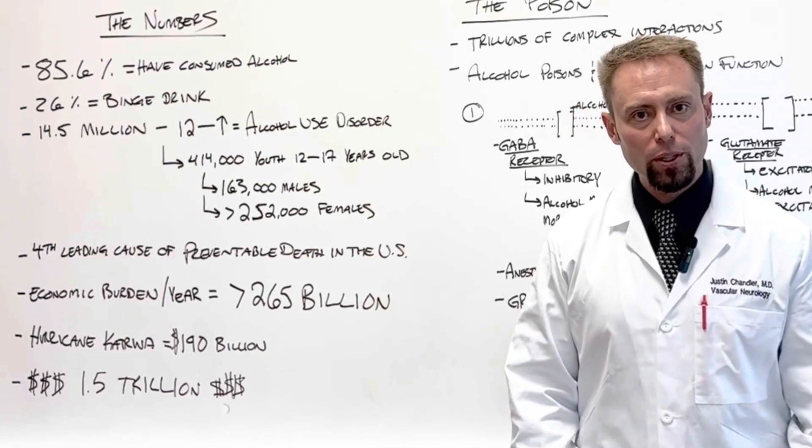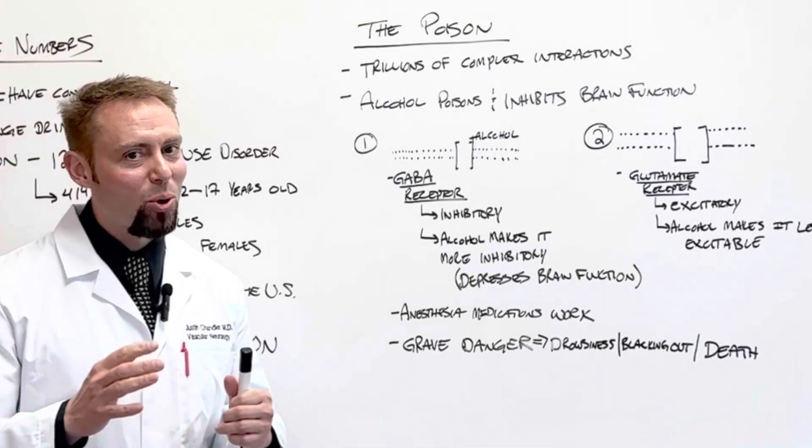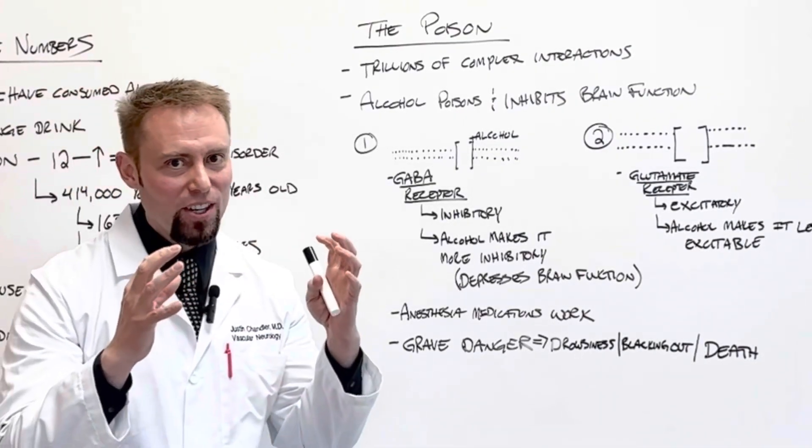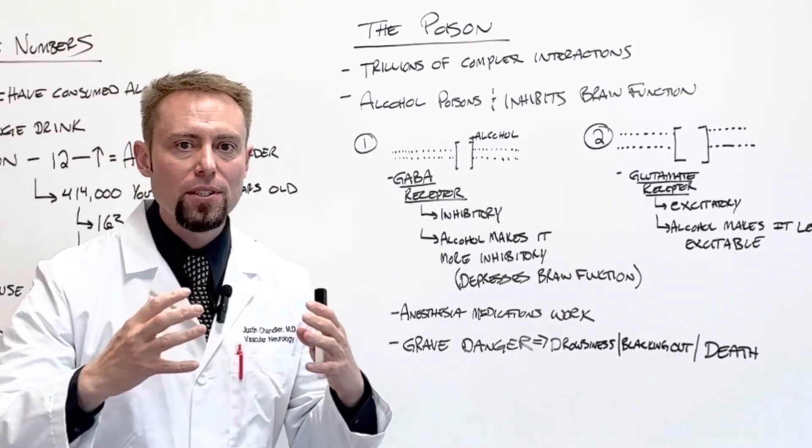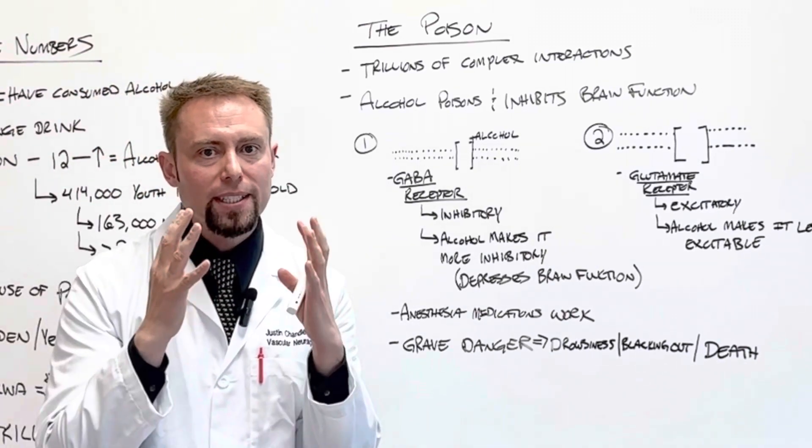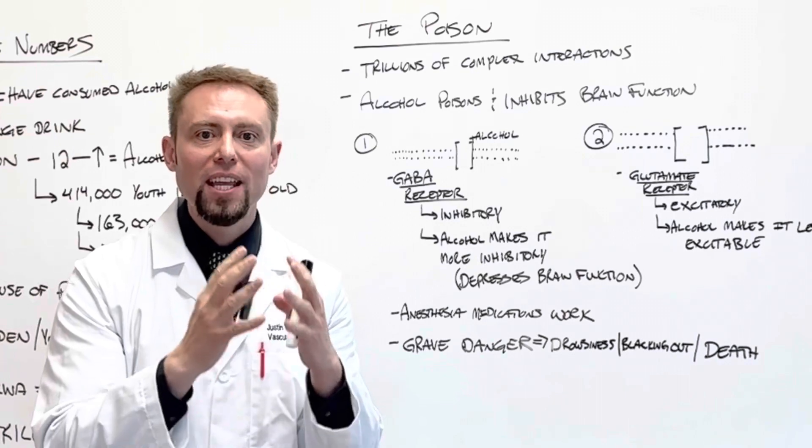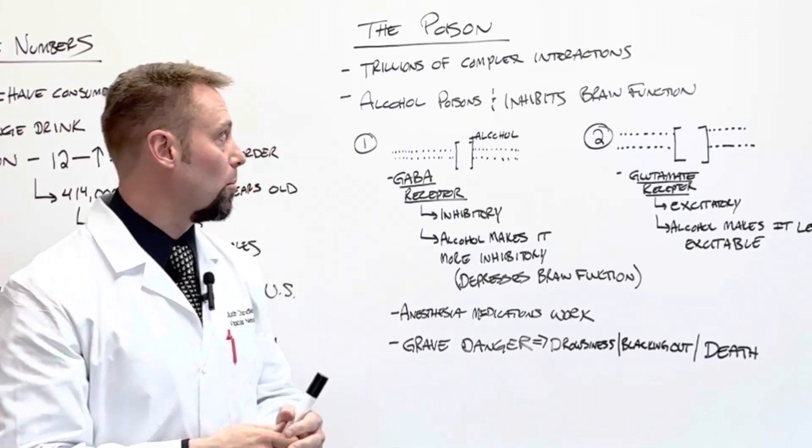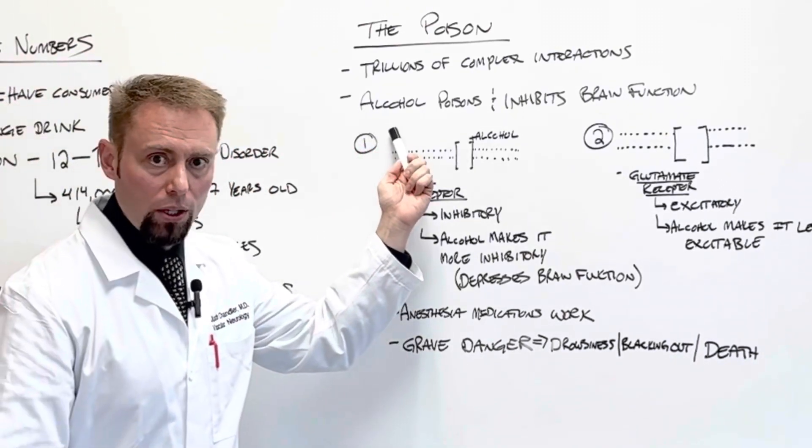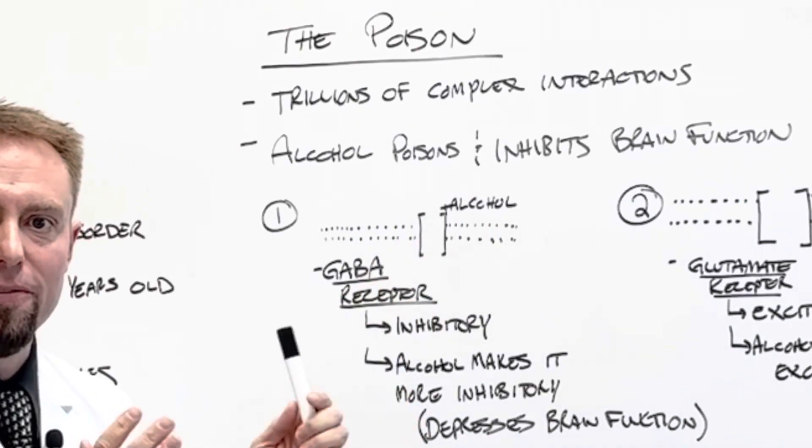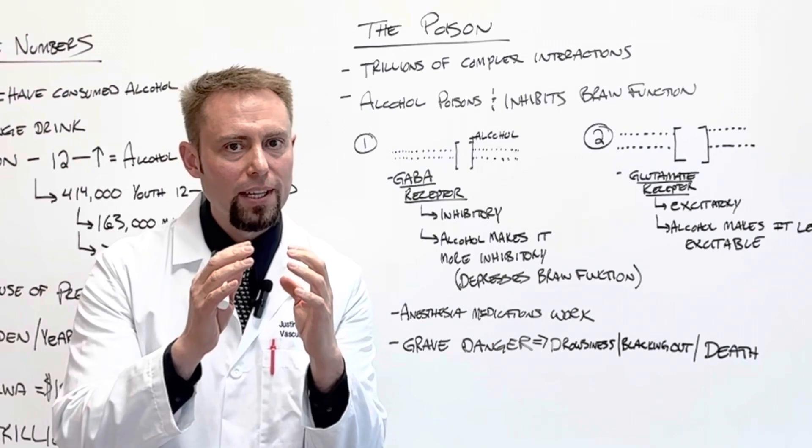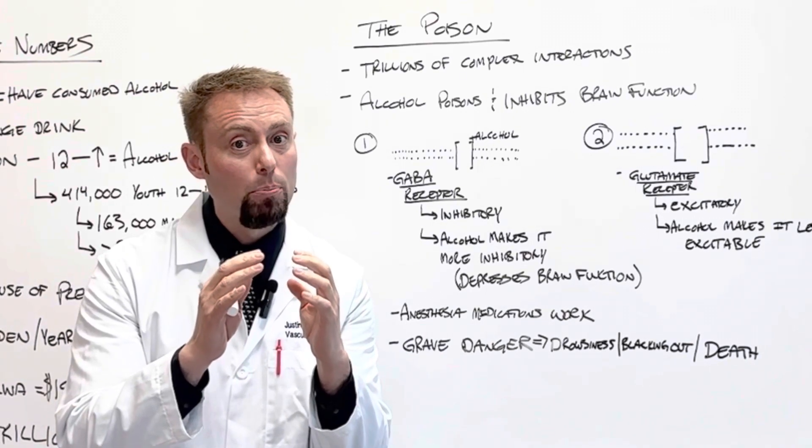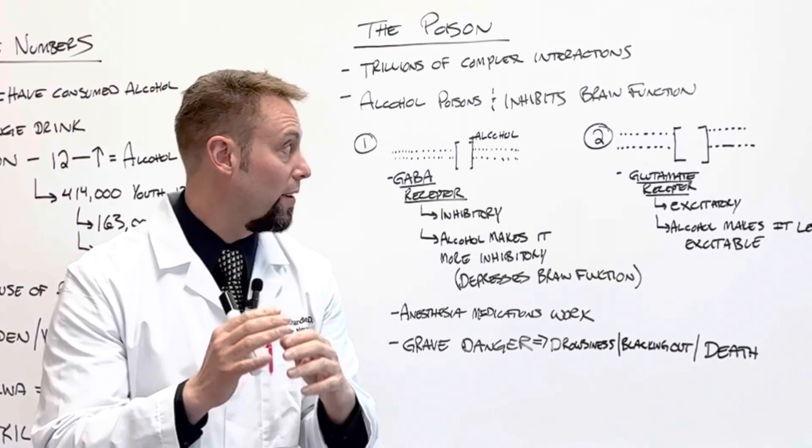Let's talk about how it works in the brain. Your brain has trillions of complex interactions. It has hundreds of thousands of millions of neurons working together in unison, in networks, throughout the entire brain. Alcohol poisons and inhibits the function of those networks.